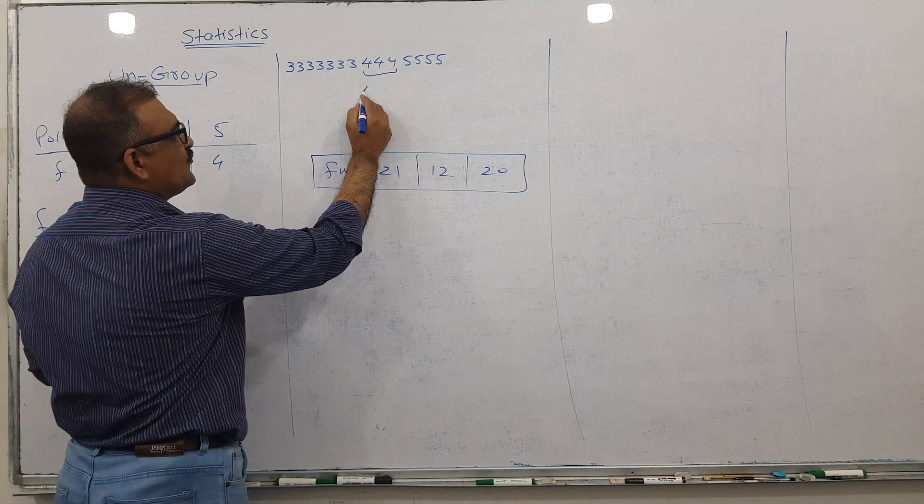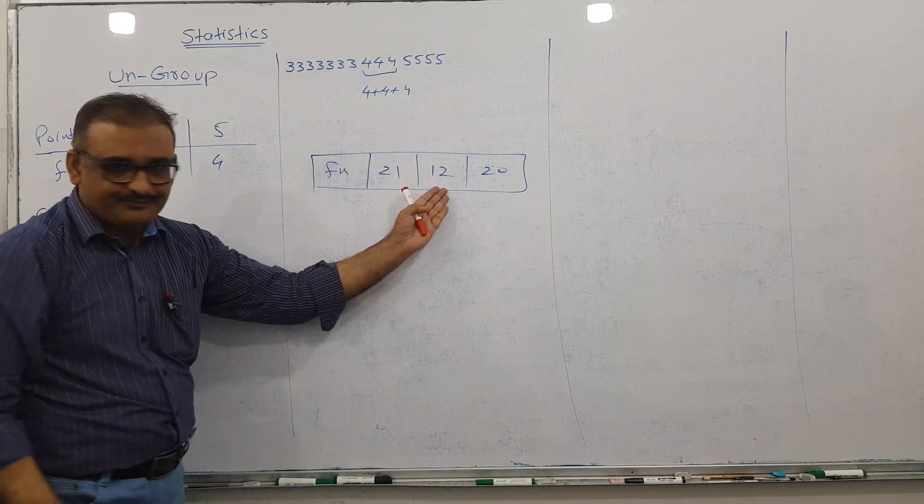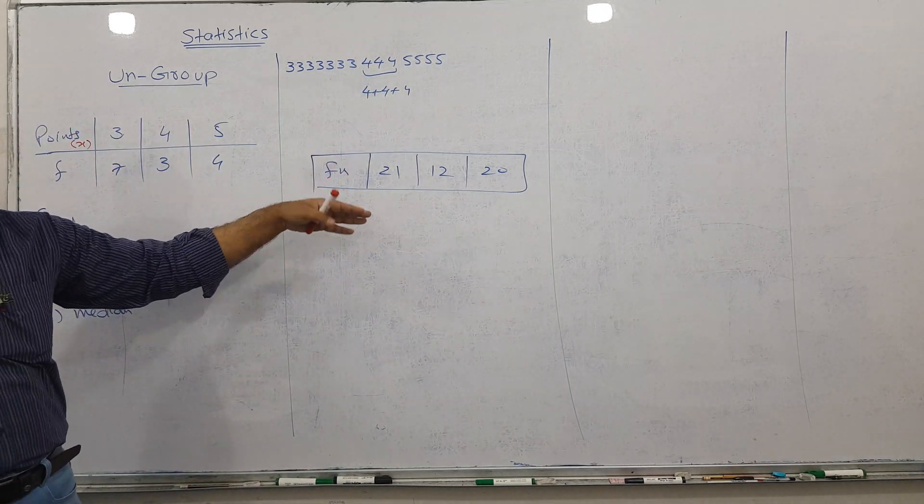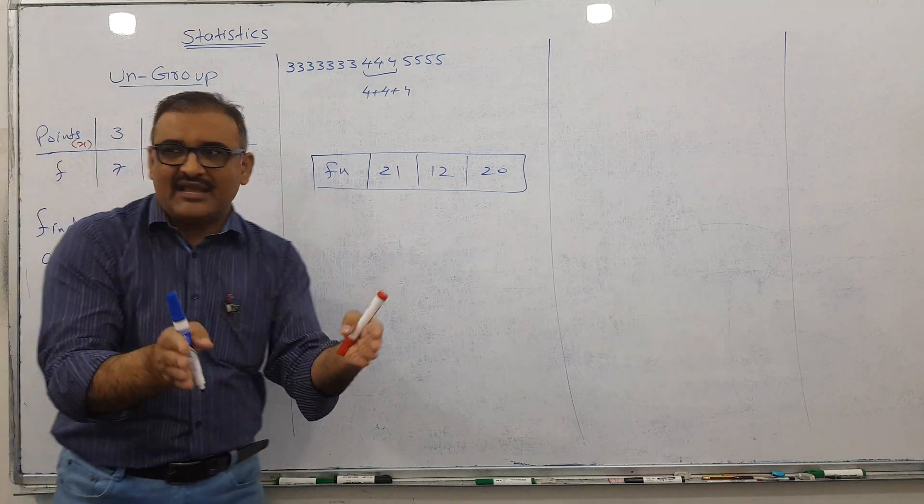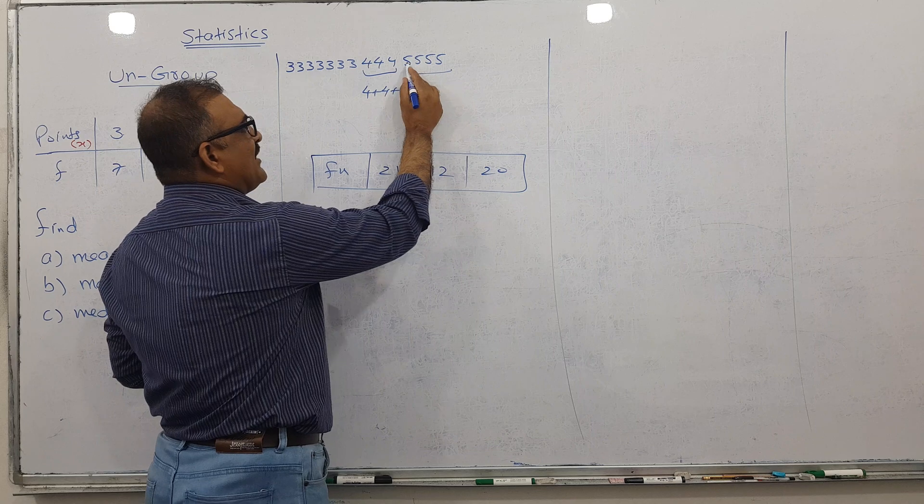For example, four comes three times, so 4 plus 4 plus 4 equals 12. Similarly, five comes four times: 5 plus 5 plus 5 plus 5 equals 20.